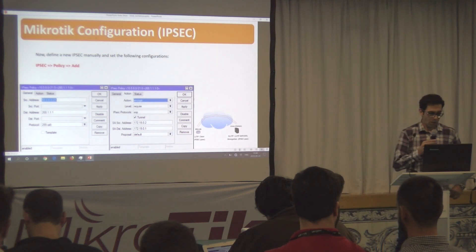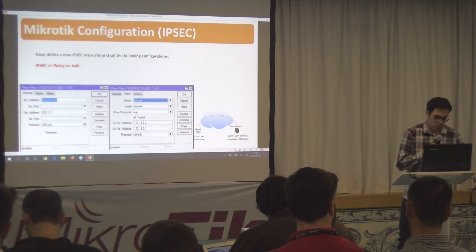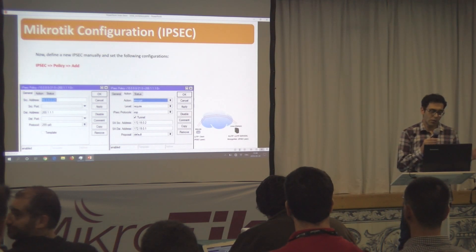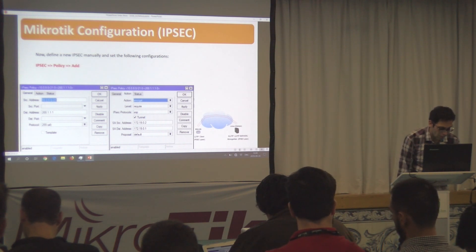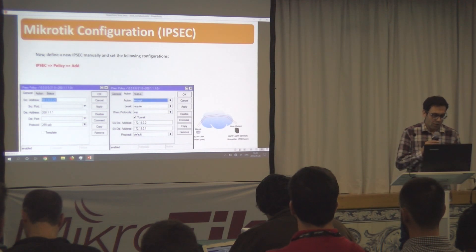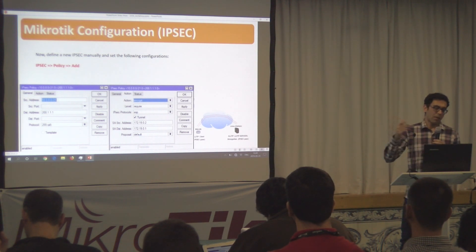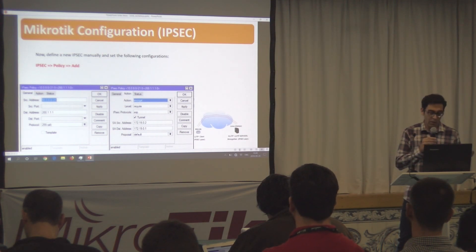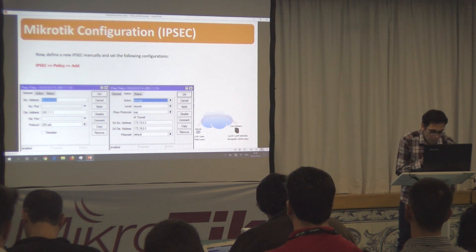After that, you need to configure IPsec. In the IPsec policy, you should add a policy. In the source address, specify the network connected to Mikrotik that you want to encrypt. In the destination, enter the target network — in this scenario, just the public IP address of the Unix server. In the action, choose 'encrypt'; in the level, choose 'required'; and use tunnel mode for site-to-site IPsec. The security association addresses are: the L2TP IP given to Mikrotik on the source side, and the L2TP IP given to the Unix server on the other. In the proposal, choose the encapsulation and other parameters — they should match what was set on the Unix side.